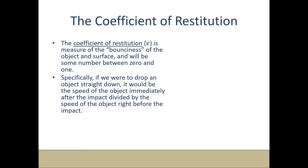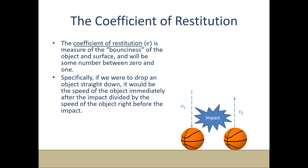The more it bounces back, the higher the coefficient is going to be. So with some initial velocity, we have the impact, then some final velocity as it bounces back up. Epsilon, our coefficient of restitution, is negative final velocity over initial velocity. The reason we have that negative is because of the change in direction — initially the basketball is going down, and after the impact it's going up — so a coefficient of restitution is going to be a positive number in the end.